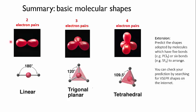However, if you'd like to explore the zoo more thoroughly, try to predict the shapes that would be adopted by molecules which have five bonds or six bonds around the central atom.